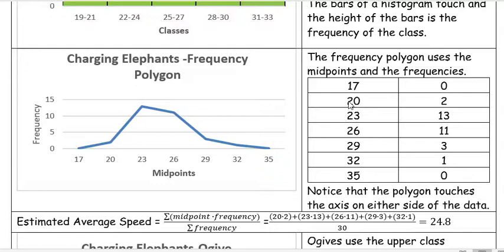Remember 17 is not really in our data, but we have a midpoint here of 20, 23, 26, 29, and 32. Then we multiply that midpoint by the frequency of that. So our midpoint for the first category was 20 and there was 2. So 20 times 2, and 23 times 13, and 26 times 11, and so forth all the way down.